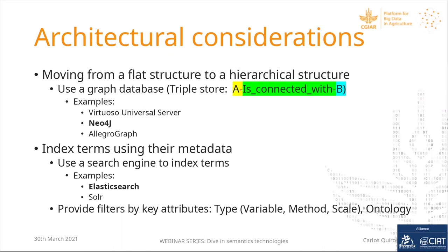We started moving from a flat structure to a hierarchical structure. We looked at using a graph database, also called a triple store. A graph database stores nodes — for example A and B — but also stores connections between A and B. For example, if A is the Alliance and B is Carlos Quiroz, it stores both those entities and the connection between them.